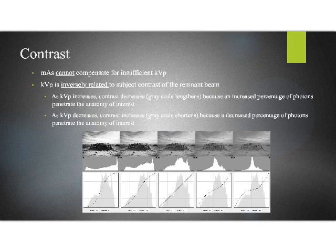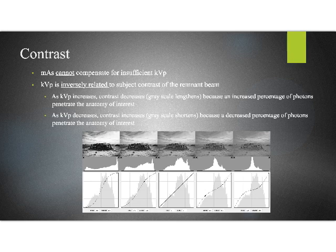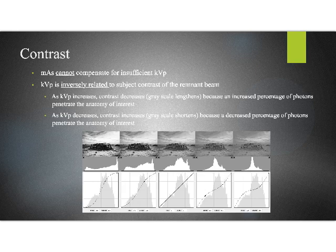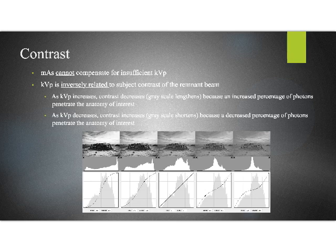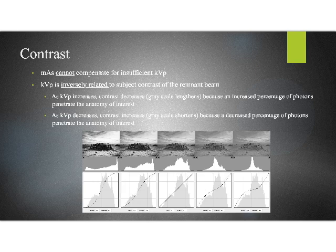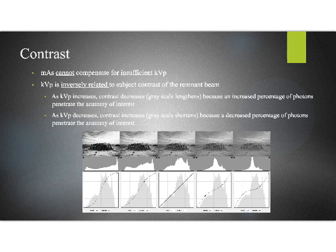Now this is going to be a primary controlling factor for contrast. Generally the rule of thumb in thinking about KVP is to think about it as the primary control of contrast. That was particularly true with film systems. It's not so much the case with digital systems, and we'll talk about why that is here. So no amount of mass can compensate for insufficient KVP. I cannot put enough buckshot in my shotgun shell to compensate for not having enough gunpowder in that shotgun shell. So I need enough KVP to shoot this stuff through the patient's body. If I don't have enough KVP, I'm not going to get an x-ray.